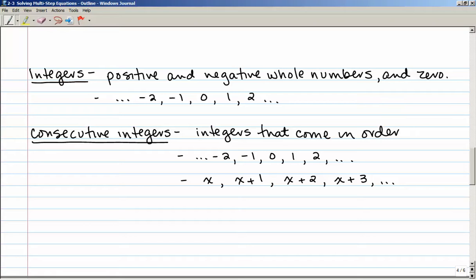Consecutive integers are integers that come in order, such as negative 2, negative 1, 0, 1, and 2. Now to represent those algebraically, I'm going to call my first integer x. Then the next one is going to be whatever x was plus 1, because that's the next number. And notice that's true here. If x is negative 2 and I add 1 to it, I get the next integer. And then my third consecutive integer would be x plus 2, because I've added 2 to my original integer, and so on.